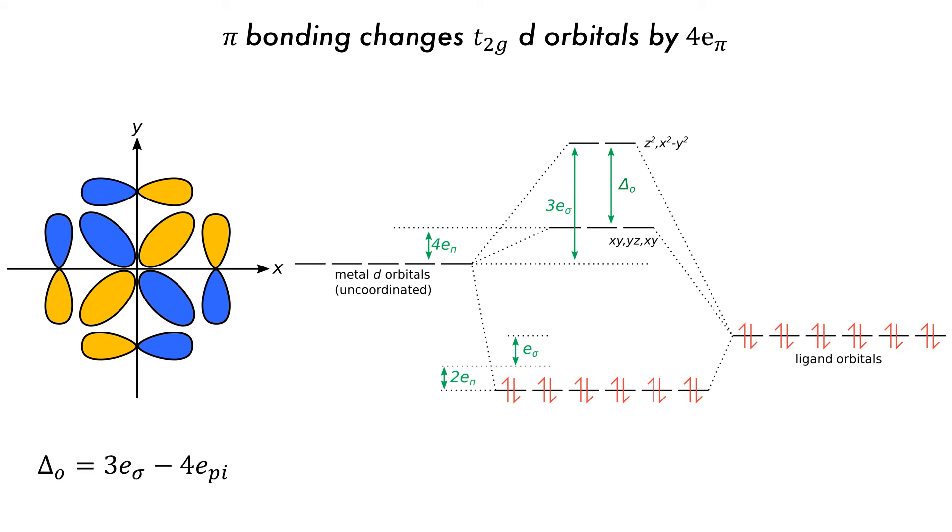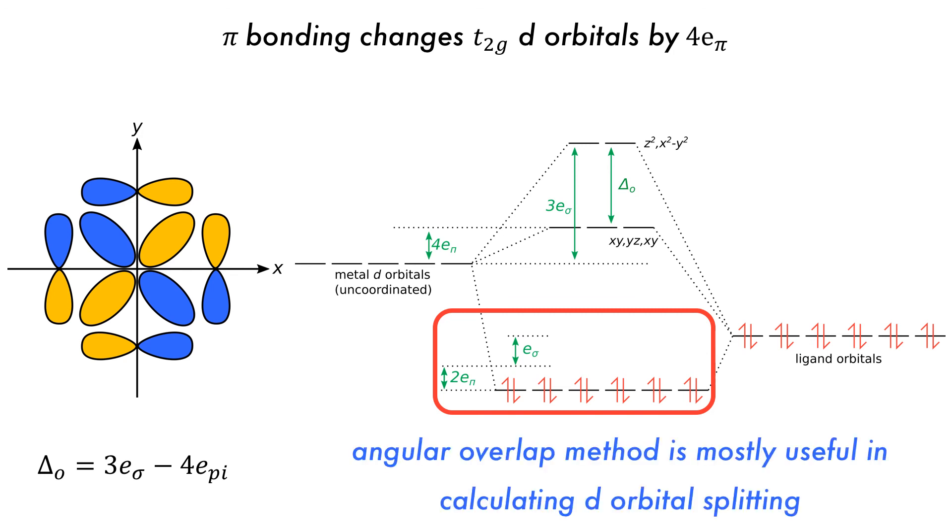An inconsistency arises between angular overlap and ligand field theory, as the same six ligand orbitals are stabilized by both sigma and pi interactions in the angular overlap method, whereas in ligand field theory they are treated separately. This means that the angular overlap method is most useful as an approximation to calculate d-orbital splittings.